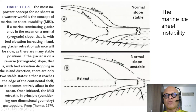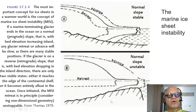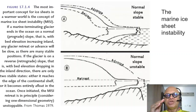If the glacier is on a retrograde slope with bed elevation dropping — the bedrock supporting the glacier, which deforms the continent when it gets heavy enough — there are only two stable states: either it reaches the edge of the continental shelf, or it becomes entirely afloat in the ocean. Once marine ice sheet instabilities have started, in principle they are unstoppable because the glacier flow processes that initiated them cannot be reversed.